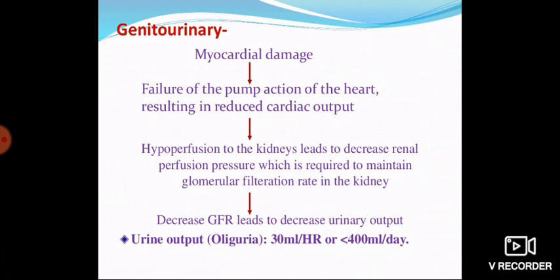In the genitourinary system, myocardial damage leads to failure of the pump action of the heart, resulting in reduced cardiac output. This causes hypoperfusion to the kidneys, leading to decreased renal perfusion pressure, which is required to maintain the glomerular filtration rate (GFR). Decreased GFR leads to decreased urinary output — less than 30 ml per hour or 400 ml per day.